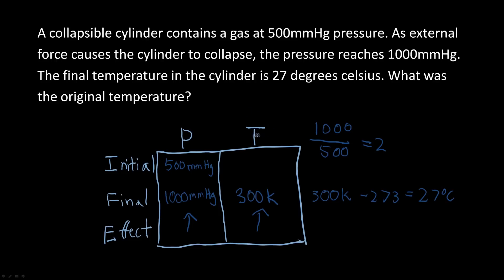However, this problem is tricky. We already have the final temperature and need to find the initial temperature at 500 mmHg. The initial temperature must be smaller than the final. We need the proportion 500/1000 = ½. Multiply this by 300K: ½ × 300 = 150K.